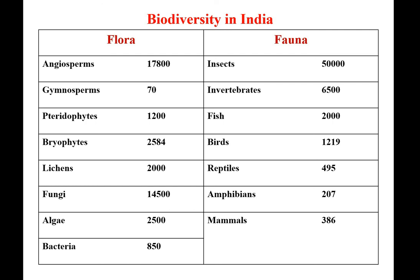Regarding biodiversity in India as far as flora is considered: angiosperms 17,800 species, gymnosperms 70, pteridophytes 1,200, bryophytes 2,584, lichens 2,000, fungi 14,500, algae 2,500, and bacteria 850 species.